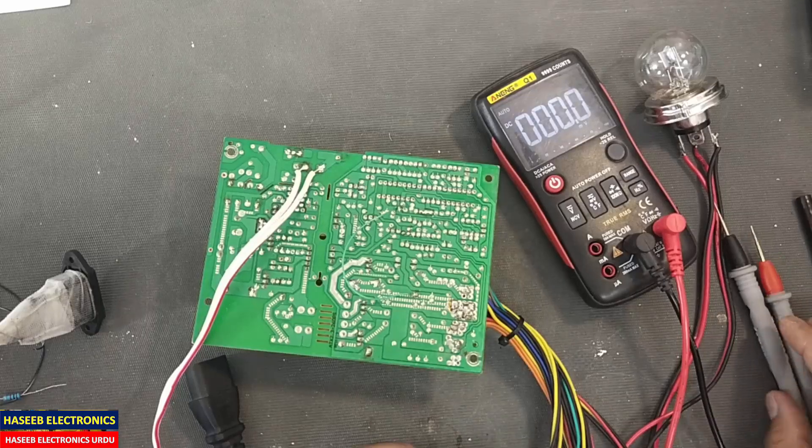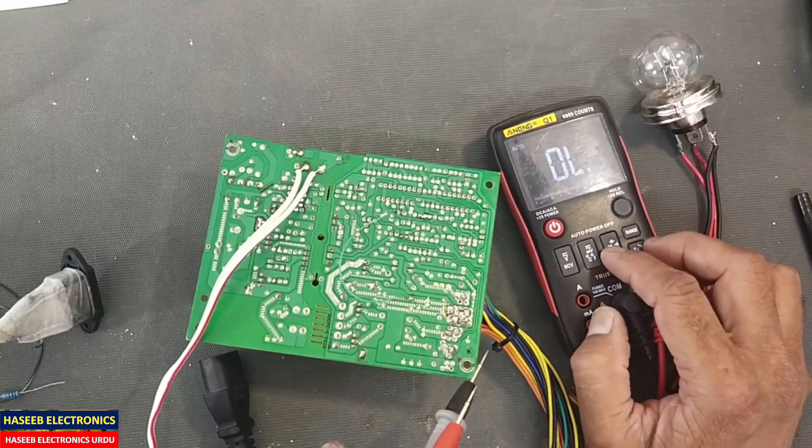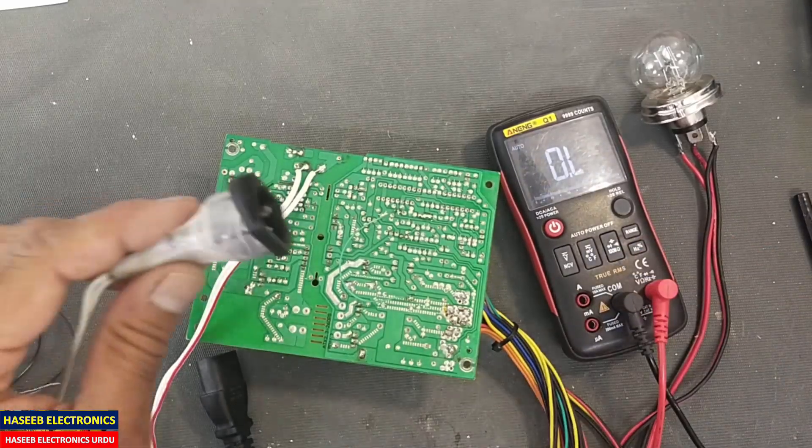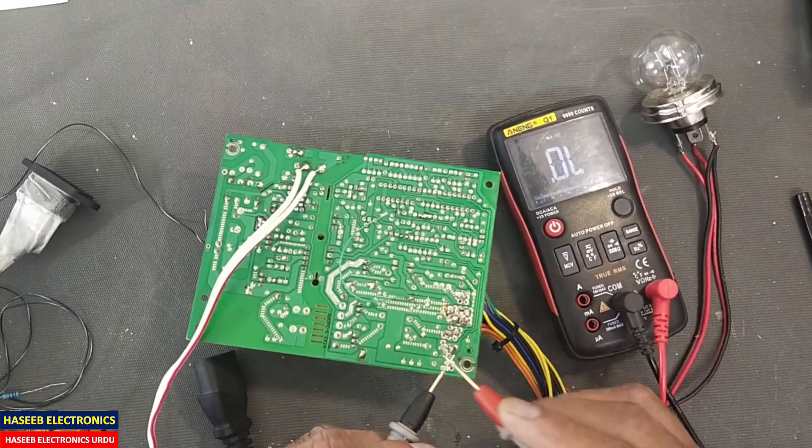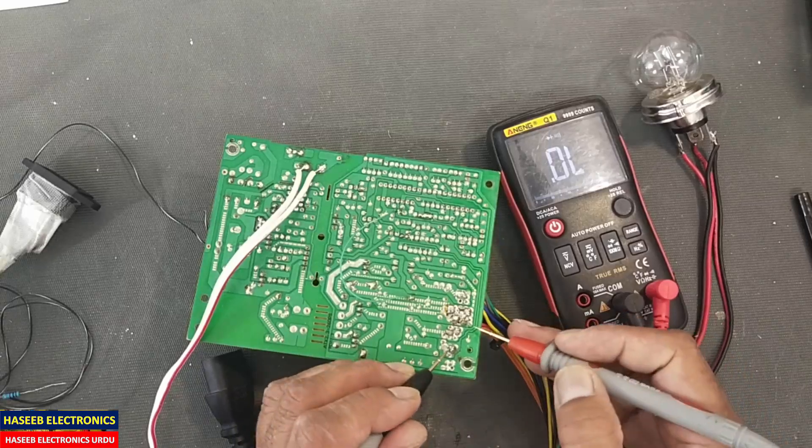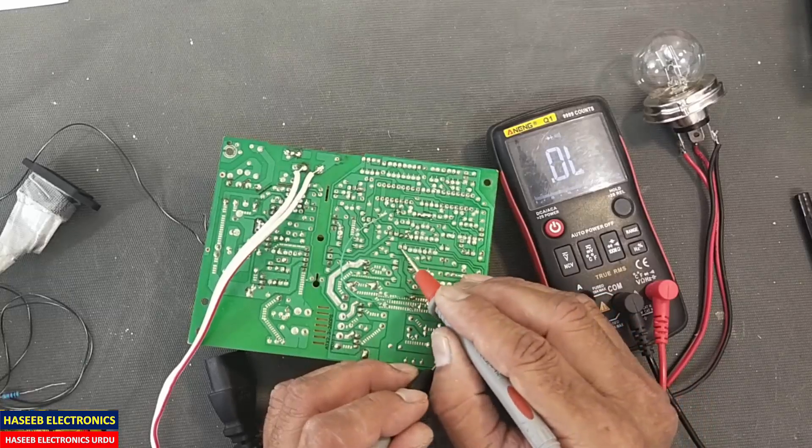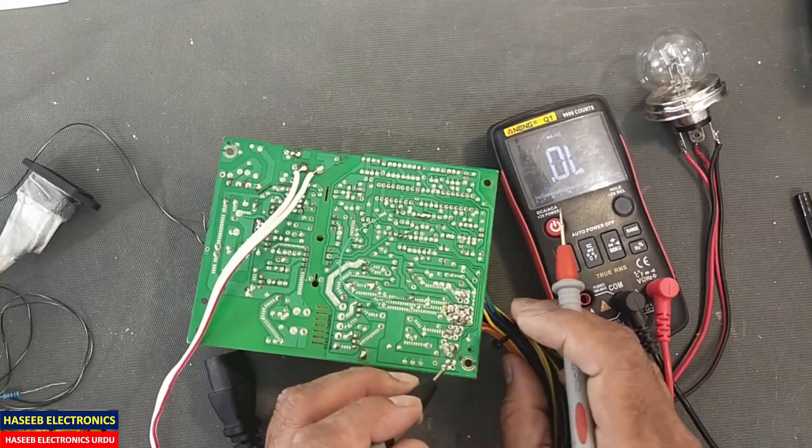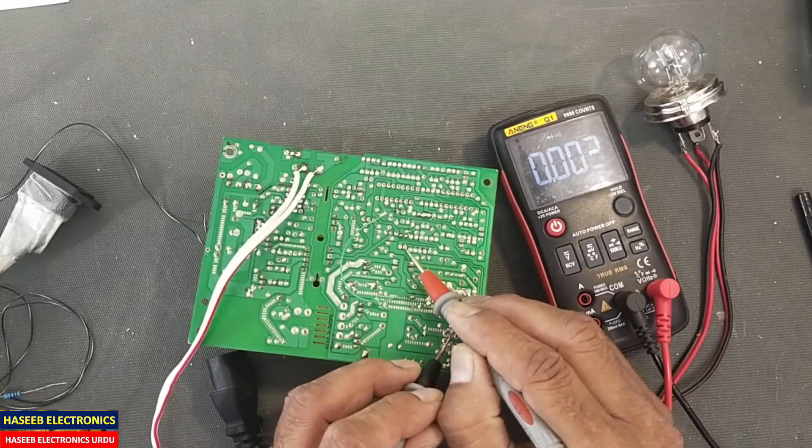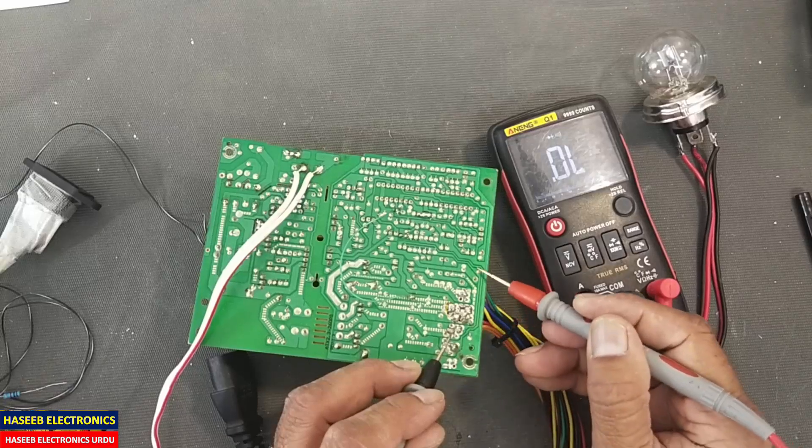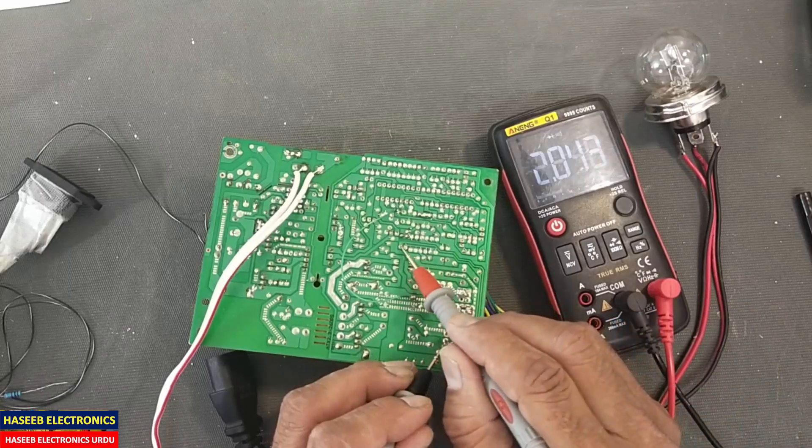Set multimeter to continuity. Now the power must be removed. Connect to the 3.3 volt section and trace. There are two lines coming here. One is this point—this is 3.3 volts. And check 5 volts—this is 5 volts. This line is reaching here at 5 volts, and this 3.3 volt section is reaching here.